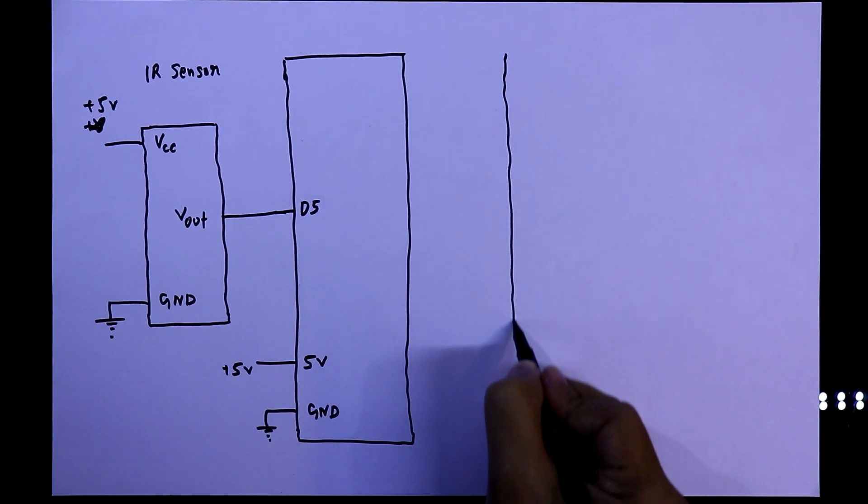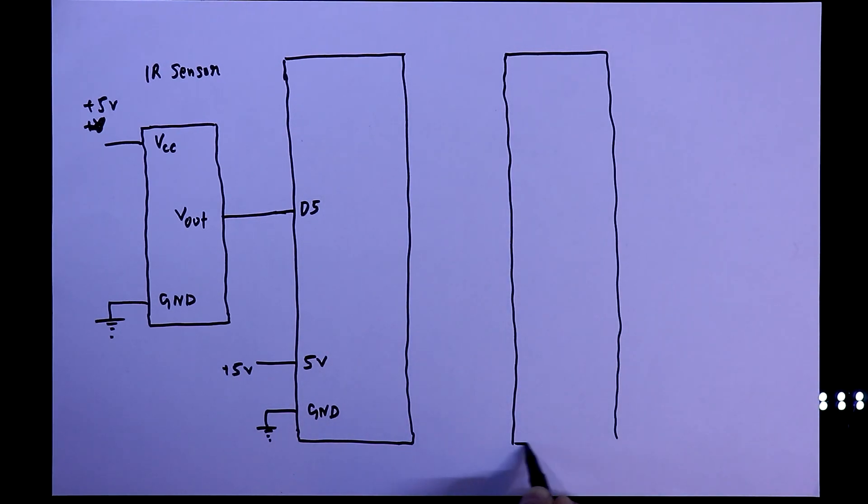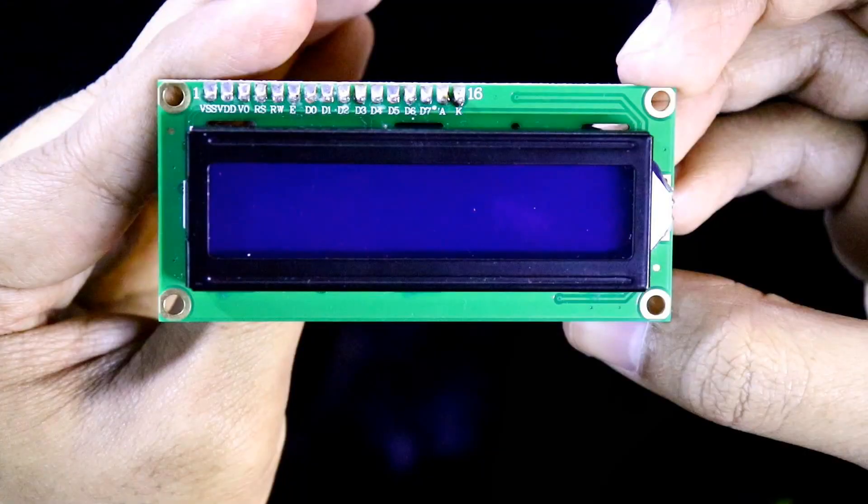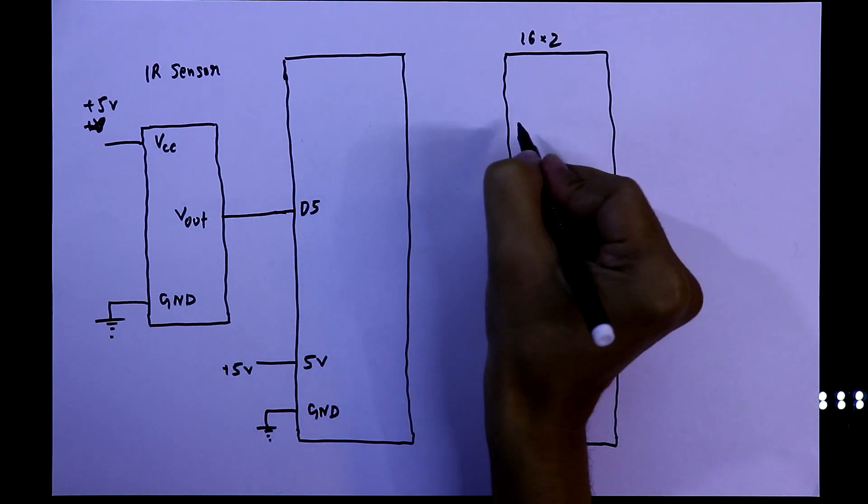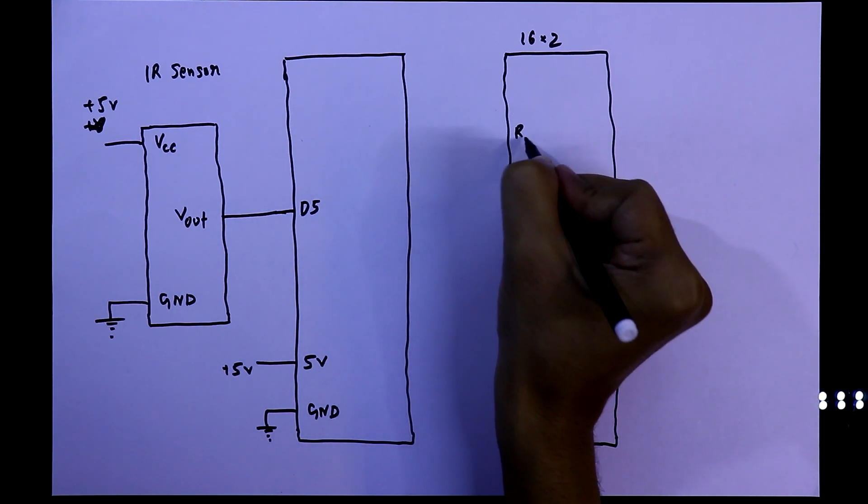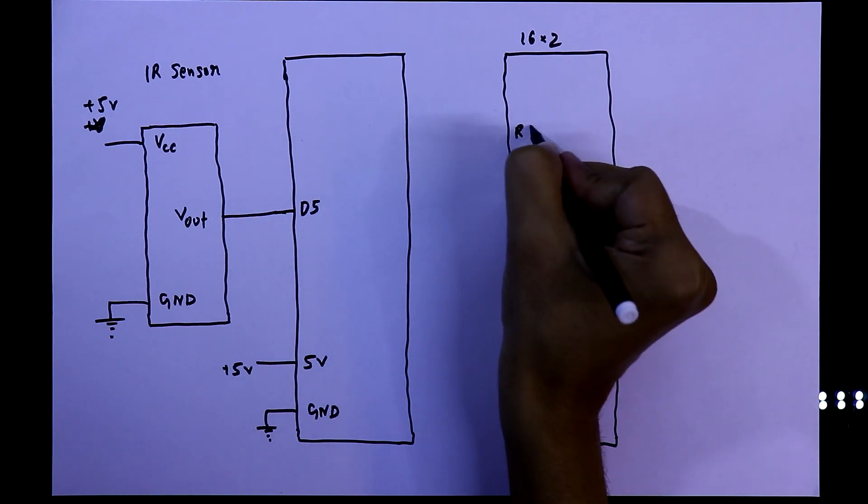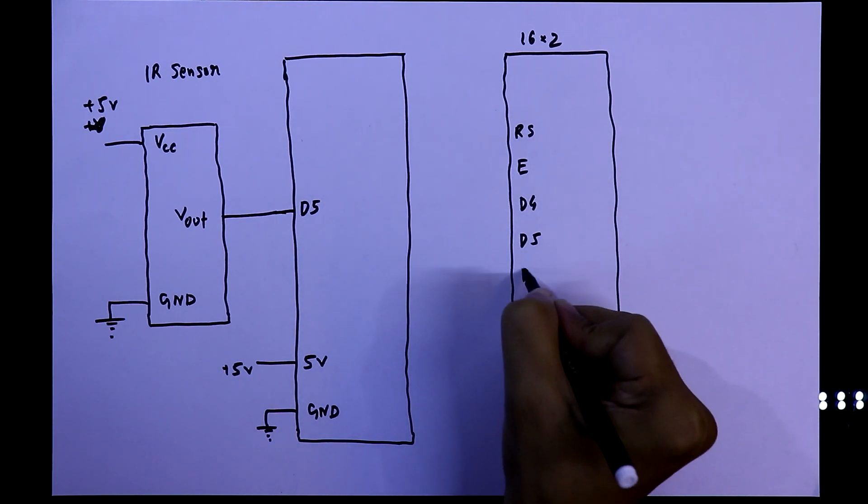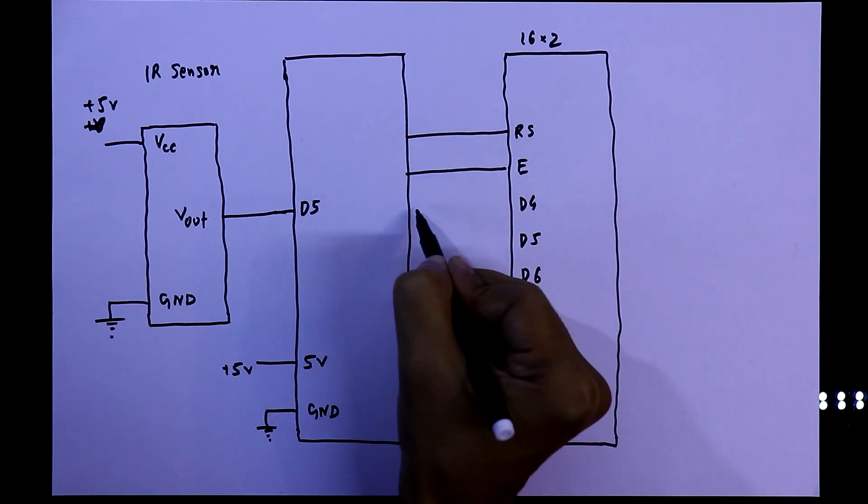Now we need the display. We are going to use a 16x2 display. This is the display we are going to use. We have to connect 6 pins of the display to the Arduino: RS, E, D4, D5, D6, and D7.